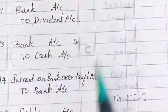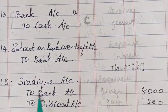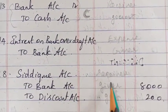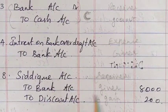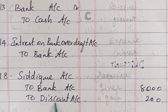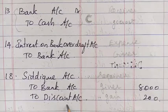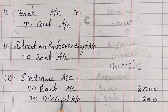18th: Siddhik account debit to bank account and discount account. Siddhik is the receiver, bank is the giver, and discount comes as a gain to us. That will come on the credit side.